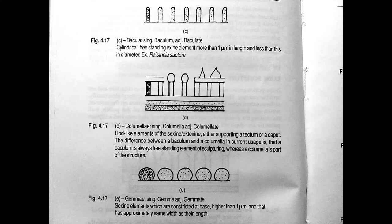Next we come to columellate. Here, rod-like elements of the ectexine or sexine either support a tectum or a caput. The difference between baculum and columella in current usage is that baculum is always a freestanding element of sculpturing, whereas columella is a part of the structure, not freestanding.